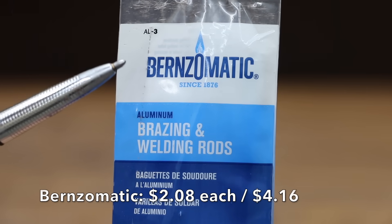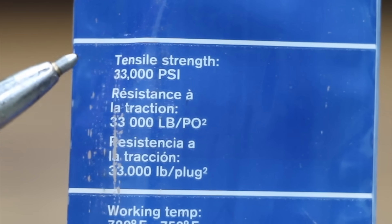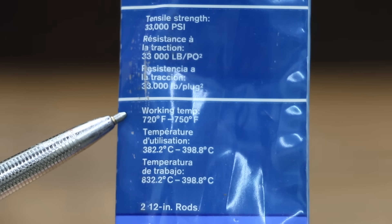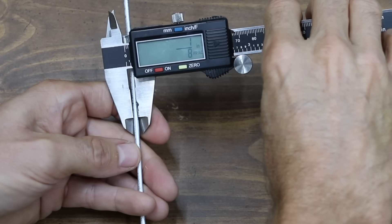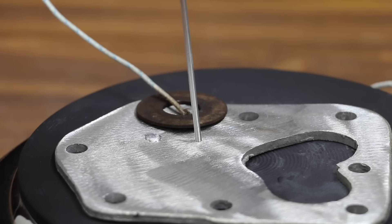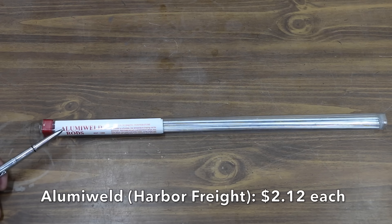At $2.08 per brazing rod, or $4.16 for this pack of two, is this Burnz-O-Matic brand. It claims to have a tensile strength of 33,000 PSI. Working temperature, 720 to 750 degrees Fahrenheit. We're going to test that. Made in USA. 1/8 of an inch. 13/128. 11.65 grams. Burnz-O-Matic did a good job at about 10 seconds.